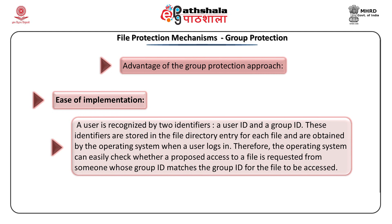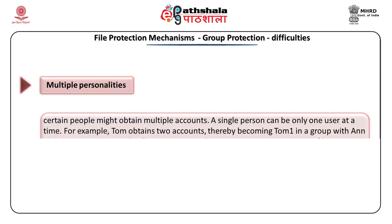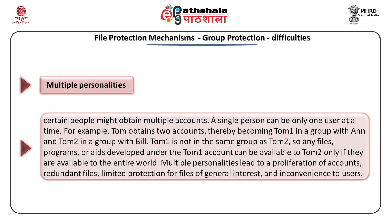Group protection overcomes certain shortcomings of all-or-nothing, but there are certain difficulties. The first is multiple personality: certain people might obtain multiple accounts, permitting them in effect to be multiple users and creating loopholes in the system. For example, Tom owns two accounts — Tom1 in a group with Ann and Tom2 with Bill. Tom1 is not in the same group as Tom2. So any files, programs, or aids developed under Tom1's account can be available to Tom2 only if they are available to the entire world.